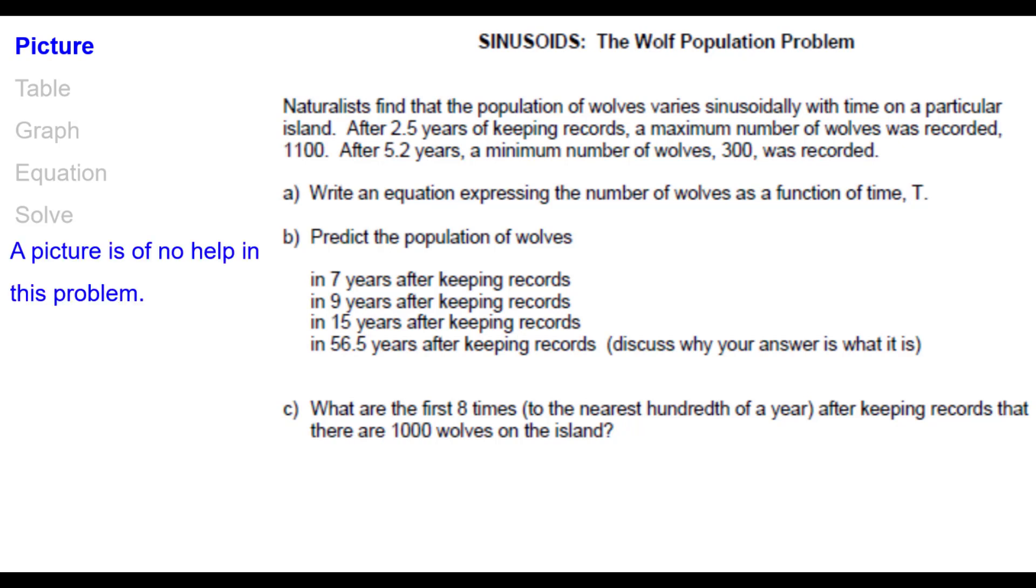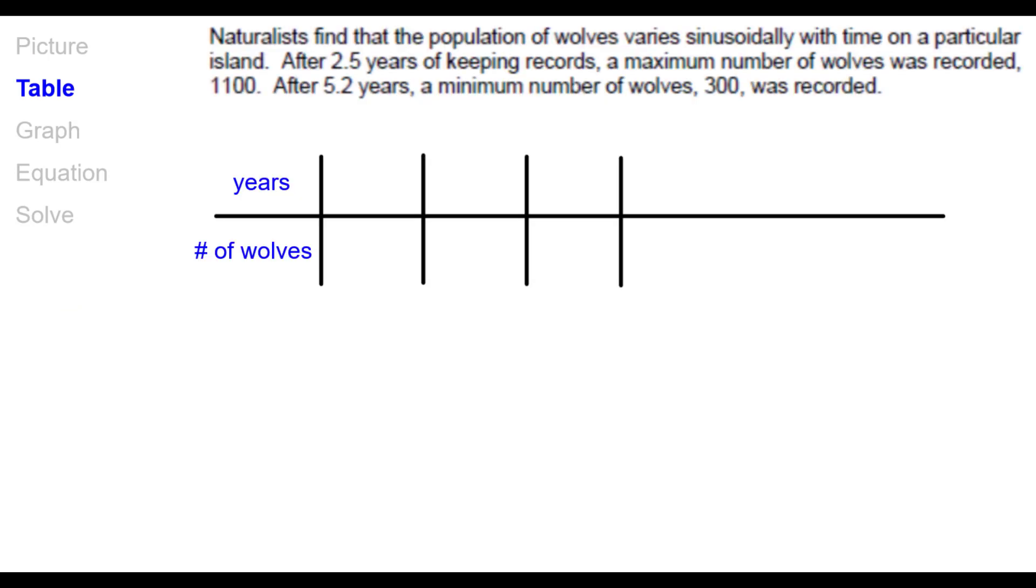So a picture is really no help here. Drawing a picture of a wolf is not going to help. So we'll go on to the second thing, let's make a table. And so here's a table, we're going to have years and number of wolves. After 2.5 years, a maximum number of wolves is 1100. So we'll go ahead and put that into our table. 2.5 years, 1100, and that's a maximum. After 5.2 years, the number of wolves is a minimum, 300. So we'll put that into our table.